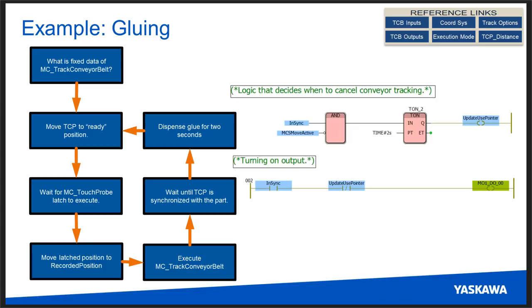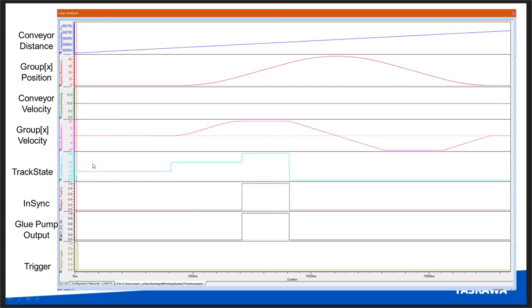After dispensing glue, we move back to the TCP ready position to prepare for the next part. This is a very simple application with just a single axis and an output triggered during execution. When we take a logic analyzer trace, this is what we see — and Nishant will walk through it.